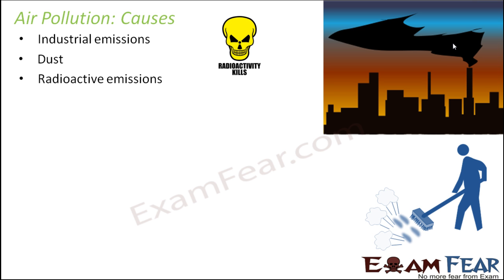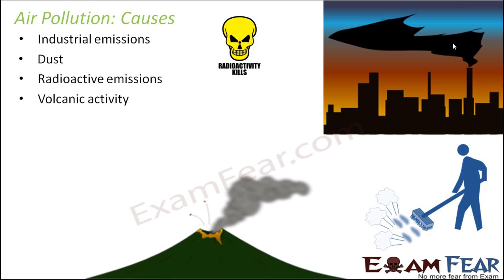Radioactive emissions: radioactive decay occurs within the earth's crust, producing gases like radon, which is very harmful and can cause diseases like lung cancer. Volcanic activity produces harmful substances like sulfur, chlorine, and a lot of ash. Smoke from fires or the burning of different substances may also contain very harmful gases like carbon monoxide.